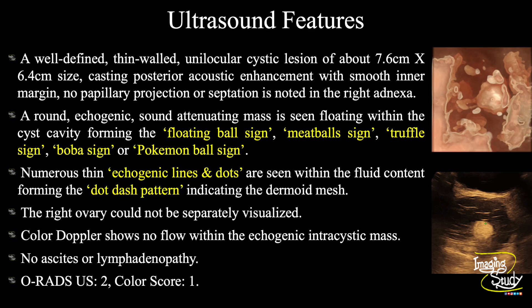There are numerous thin echogenic lines and dots within the fluid content forming the dot-dash pattern, indicating the dermoid mesh. We couldn't see the right ovaries separately; moreover, the patient is in a postmenopausal state. If you want to see the ovary, transvaginal ultrasound may give you better views. On color Doppler there was no internal or any abnormal peripheral vascularity. There was no ascites or lymphadenopathy. These features conclude it as a case of right adnexal mature cystic teratoma or dermoid cyst.